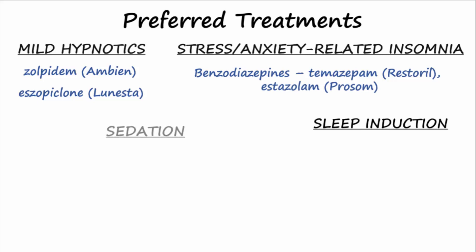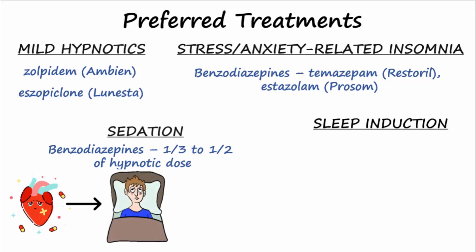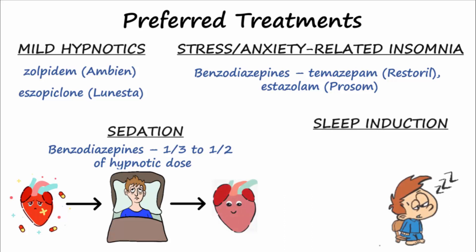For sedation, benzodiazepines at a dosage of one-third to one-half of their hypnotic dose may be used. A benzodiazepine in a lower dose may also be given after a heart attack to reduce the patient's desire for physical activity, so the patient will rest and the heart can repair itself. If sleep induction is the issue — where the patient is simply having trouble falling asleep and not maintaining sleep — zaleplon or ramelteon may be recommended.